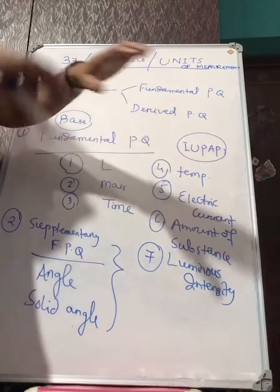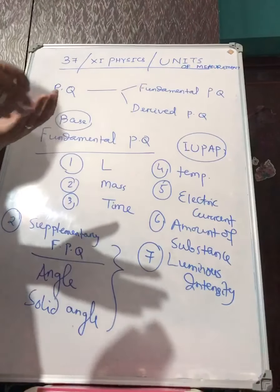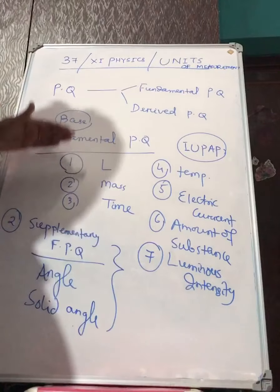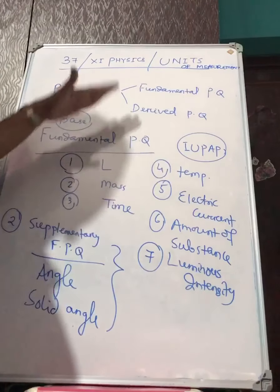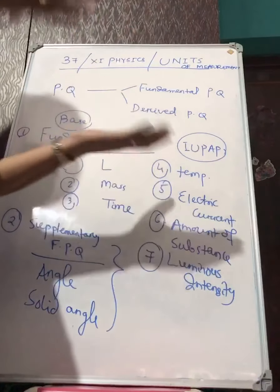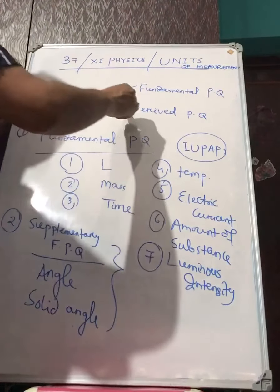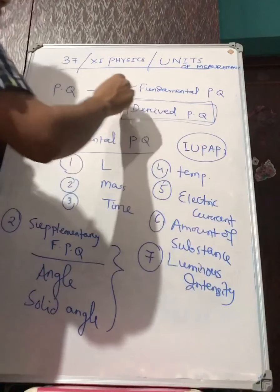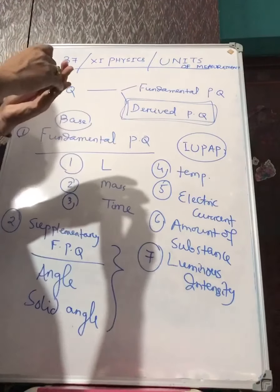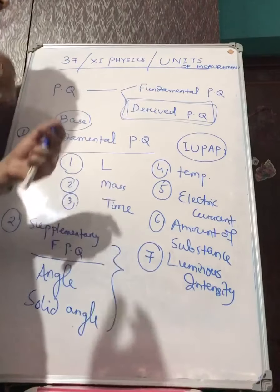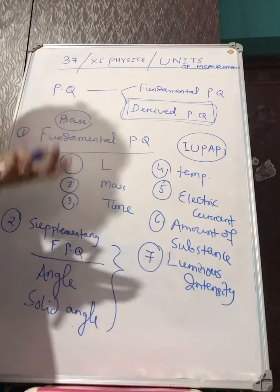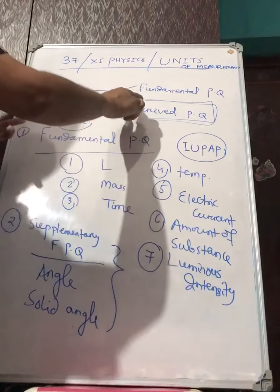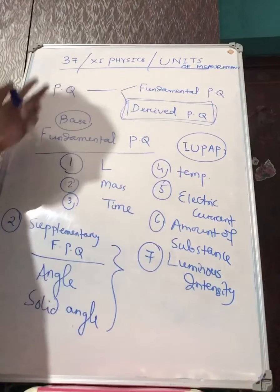To explain the laws of physics and natural phenomena, there are many physical quantities. Except these nine, whatever other physical quantities there are fall under derived physical quantities. For example, force, velocity, acceleration, work — so many physical quantities come under derived physical quantities.